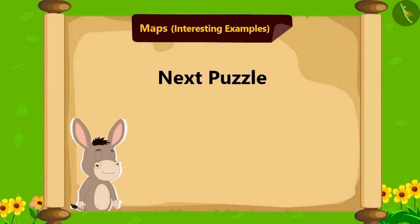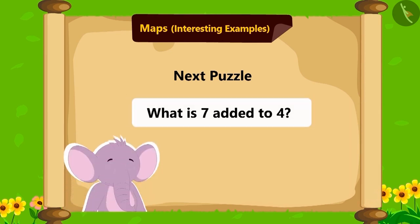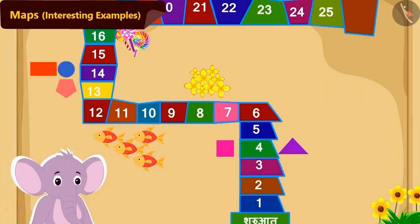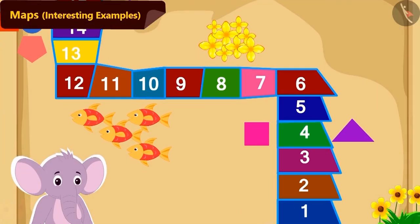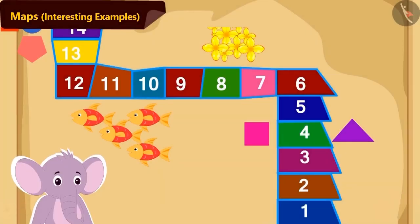Bholla's next puzzle is: which tile is 7 steps ahead of tile number 4? Children, do you know its answer? How much is 7 added to 4? 11. So 7 steps ahead of tile 4 is tile number 11.